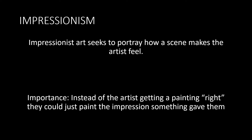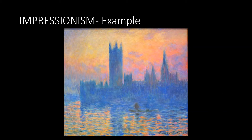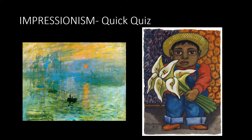This is important because instead of the artist getting a painting right, they could just paint the impression something gave them. Here is an example of an impressionist painting. Notice how the artist doesn't make the water look real, just how it makes him feel.